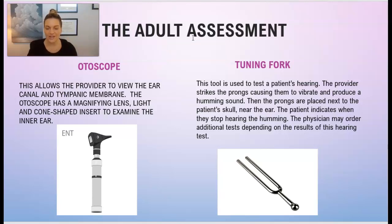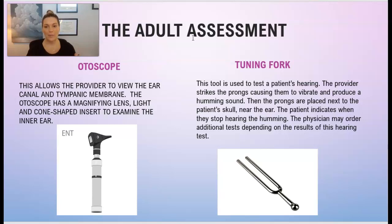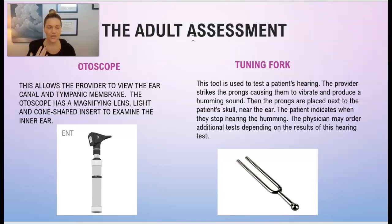We have a tuning fork — this tool is used to test a patient's hearing. The provider will strike the prongs, causing them to vibrate and produce a humming sound. The prongs are then placed next to the patient's skull near the ear, and the patient indicates when they stop hearing the humming. The physician may then order additional hearing tests depending on the results of this tuning fork test.